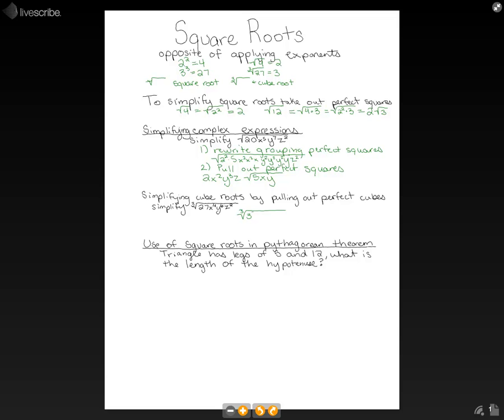So 27 we know is just three cubed. We have x to the third and another x there, and we have y to the third and y to the third, because we can break that y to the sixth down to that. And we still just have a z squared there.